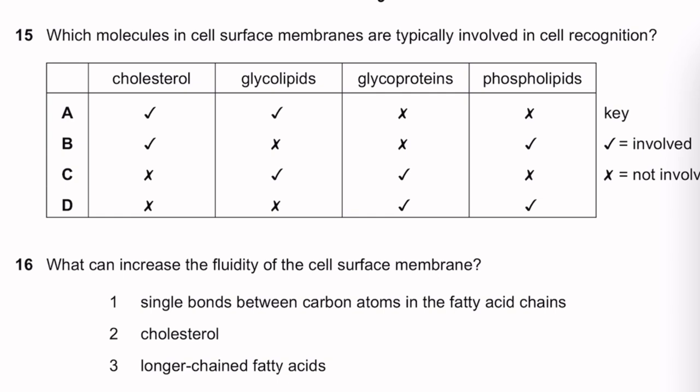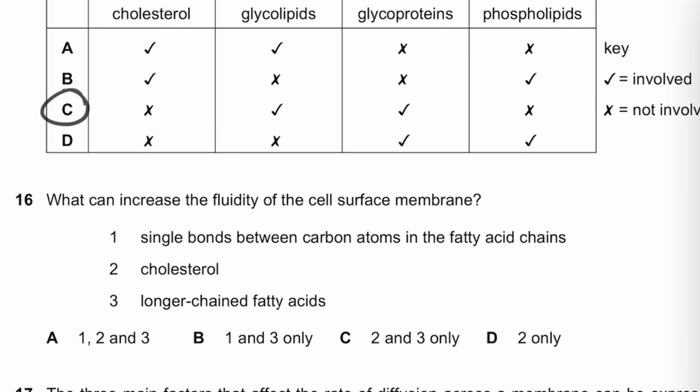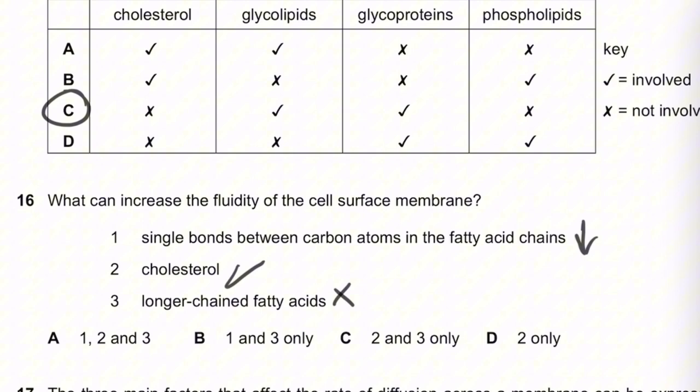Question 16: What can increase the fluidity of the cell surface membrane? Single bonds between carbon atoms in fatty acid chains means saturated — this decreases fluidity. Double bonds (unsaturated chains) increase fluidity. Cholesterol also increases fluidity. Longer fatty acid chains decrease fluidity; shorter chains increase it. The answer is B — cholesterol only, as the option with single bonds is wrong.